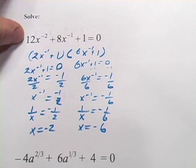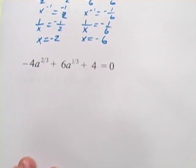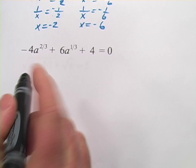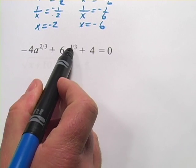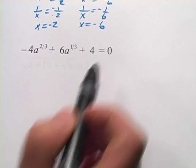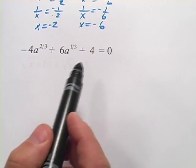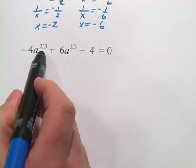So not too much different than solving a regular quadratic. Let's look at one with fractional exponents here. Now we've got negative 4a to the 2 thirds power plus 6a to the 1 third power plus 4 equals 0. It still has that general form of the quadratic, except we've got these fractions up here.